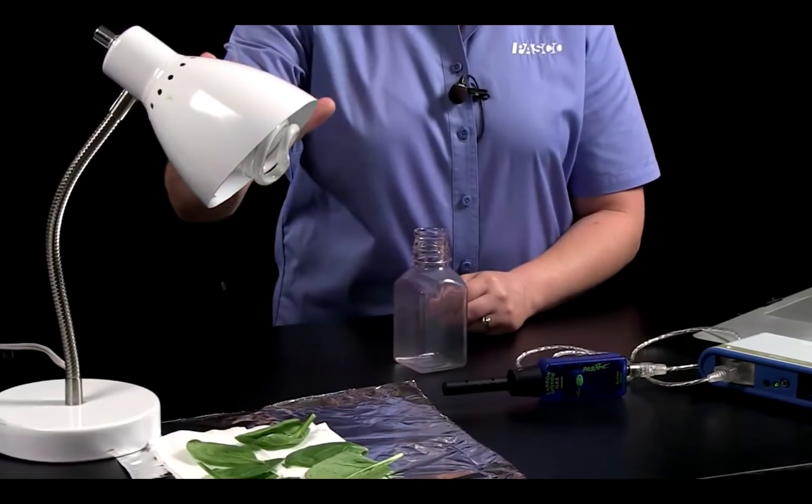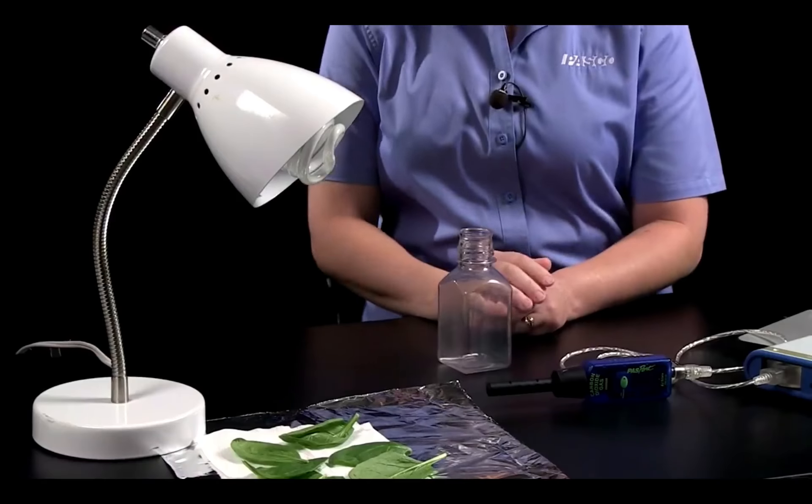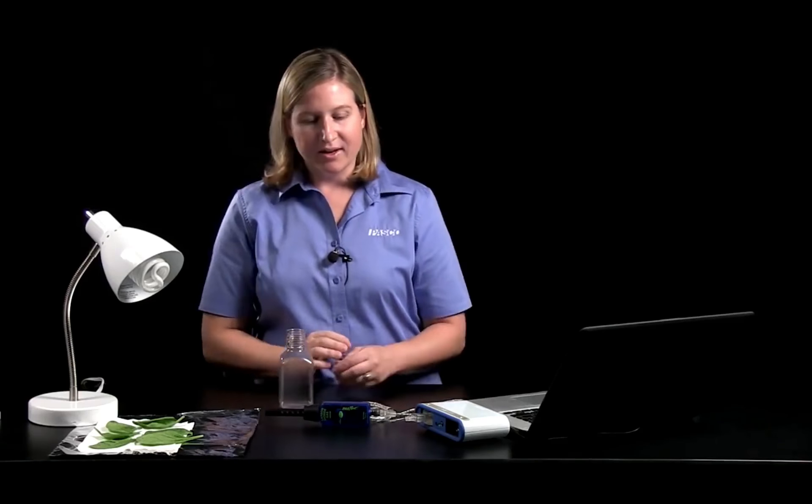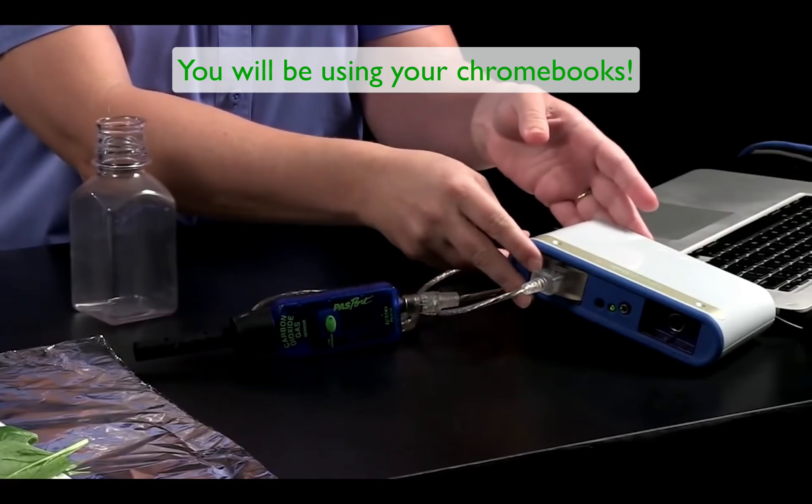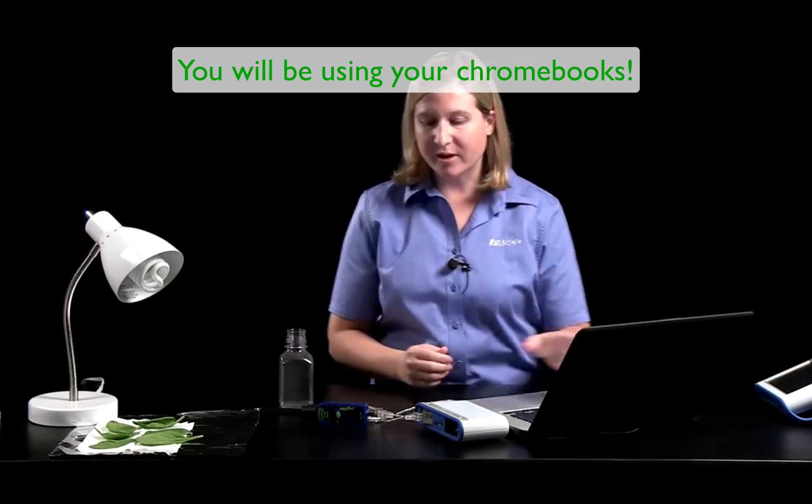The materials are very simple for the lab. We're going to use spinach that was just purchased at the grocery store, a carbon dioxide sensor in the sampling bottle that came along with it, some foil, and a lamp.